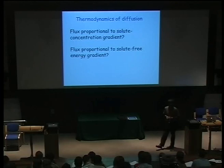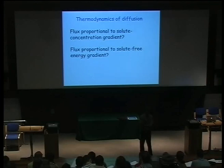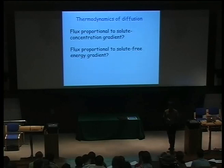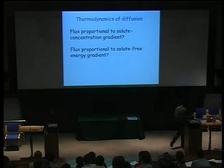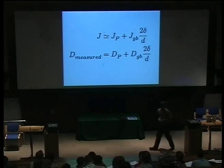So that deals with structure-sensitive diffusion. We've derived a diffusion coefficient which is a function of grain size, where the defect is the grain boundary. A similar calculation could be done for pipe diffusion along dislocations. We can represent this diffusion coefficient as a function of temperature: a plot of ln(D) versus 1/T will no longer give a straight line because the grain boundary diffusion coefficient and the lattice diffusion coefficient have different temperature dependences.